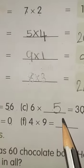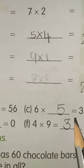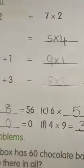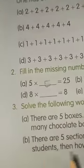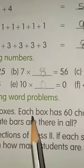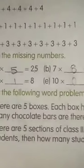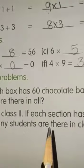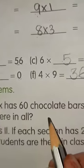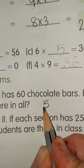Next, 4 times 9 is 36. Next, here we have word problems. There are 5 boxes. Each box has 60 chocolate bars. How many chocolate bars are there in all? Children, there are 5 boxes.